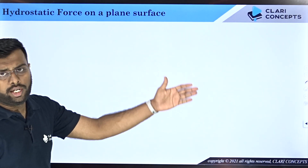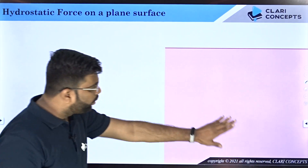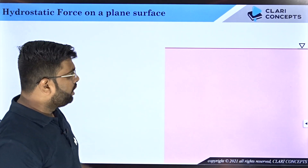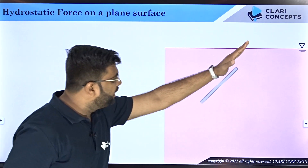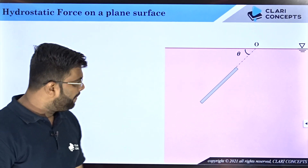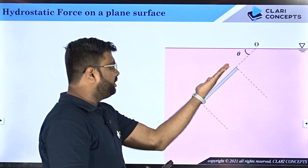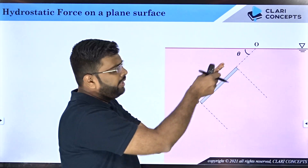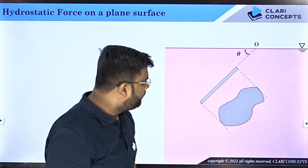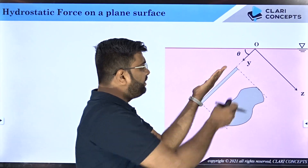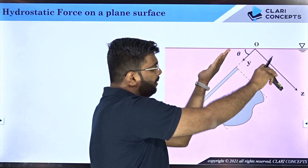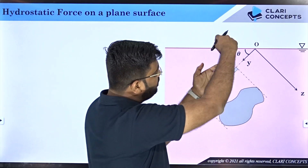Let's say we have a fluid pool with a free surface, and a plate inclined at an angle θ from the free surface. When you look at the plate from the side you see its thickness, but from the top you see an irregular shape. The y-axis is along the length of the plate, the z-axis is perpendicular to this length, and x is the frontal axis.